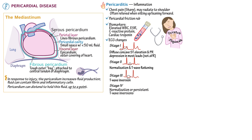Treatment for pericarditis includes aspirin, NSAIDs, and colchicine. Corticosteroids may be considered if these drugs fail.